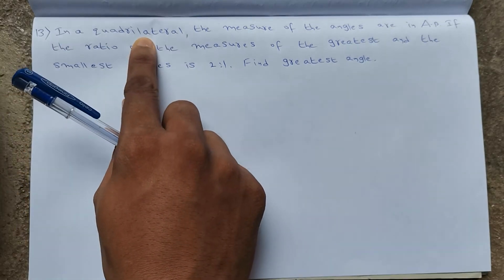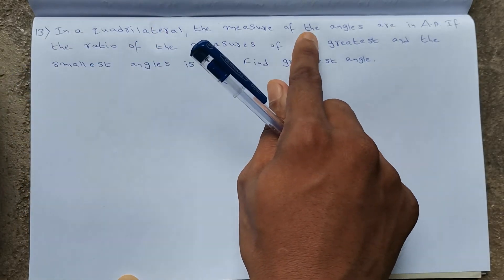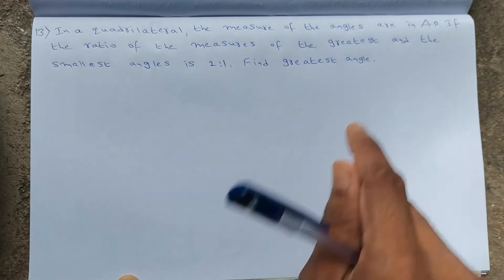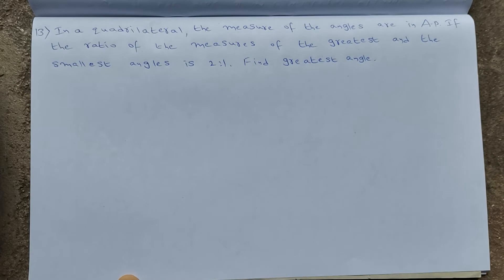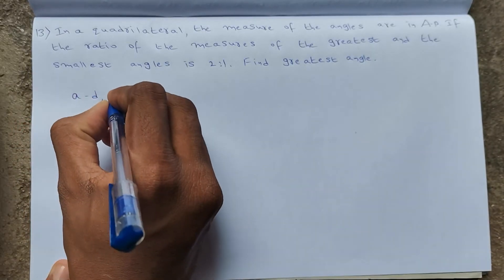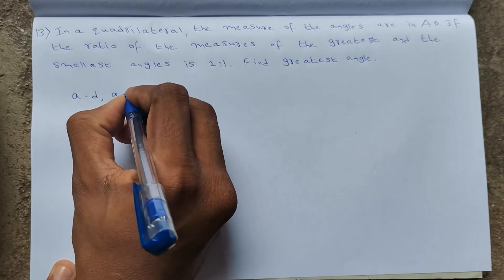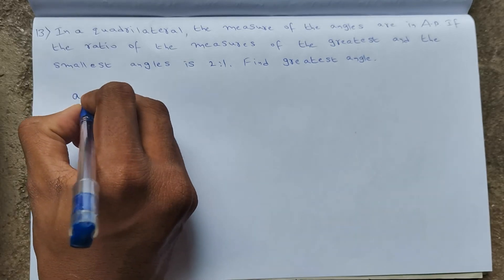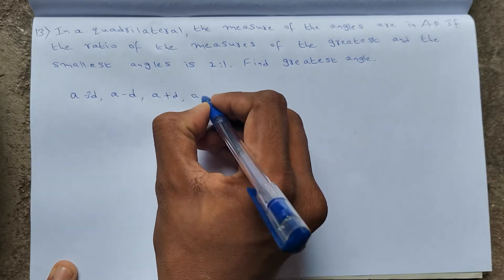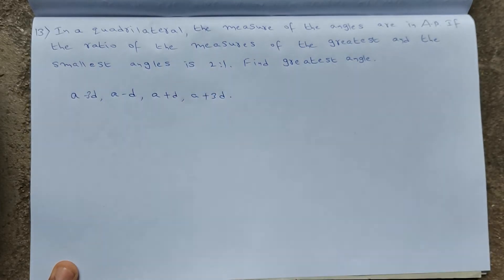The next question: in a quadrilateral, the measures of the angles are in AP. A quadrilateral has four angles, and they are in arithmetic progression. Taking them as A − 3D, A − D, A + D, A + 3D.